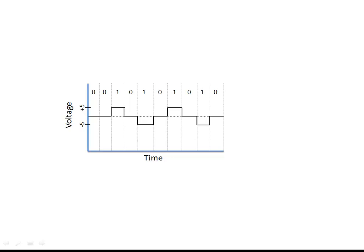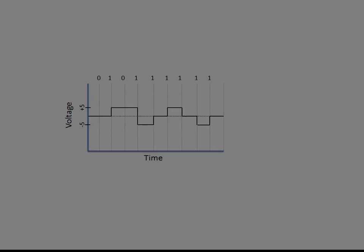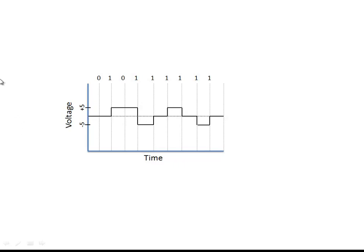This is not the only way to represent binary 1s and 0s. In addition to current state modulation, we have state transition modulation. With state transition modulation, we get a binary 1 only when there is a change in state — for example, going from 0 volts to a positive voltage. Even if we have a positive voltage maintained across a couple of timing intervals, that's still a binary 0 because we didn't transition. Just a couple of examples of how binary 1s and 0s can be represented on the wire.